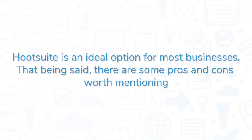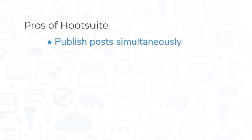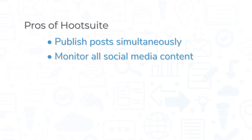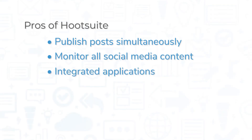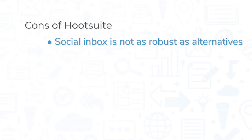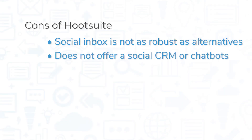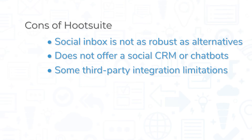Hootsuite is an ideal option for most businesses, though there are some pros and cons worth mentioning. On the pro side, customers can publish to several social media platforms simultaneously, the Streams feature allows monitoring of a broad range of social media content, and Hootsuite has a portfolio of integrated applications to augment core functionality. As for cons, Hootsuite's social inbox is not as robust as alternative solutions, it does not offer a social CRM or chatbots, and some third-party integrations like Zendesk and Basecamp are only available in high-tier plans.